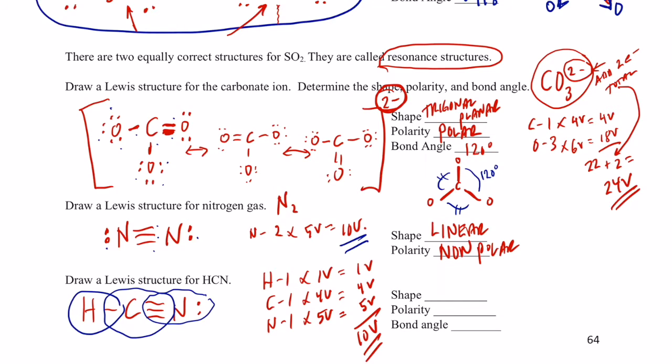Now we have two regions of electron density. We have the carbon here, a nitrogen there and a hydrogen there, and there's nothing above or below. There are no non-bonding pairs, so that, kiddos, is called linear.